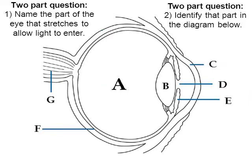We're kind of at the end of this video. This is a quiz to see how well you remember. Pause the video and try to answer the two-part question. Name the part of the eye that stretches, and then identify it. I hope you chose E — the iris. The iris is the answer to number one, letter E is the answer to number two.